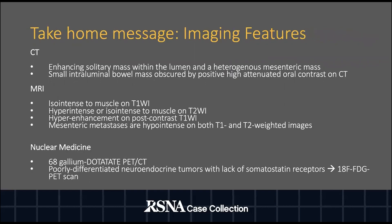On CT imaging, small bowel carcinoid tumor presents as an enhancing solitary mass within the small bowel lumen with a heterogeneous mesenteric mass. This intraluminal bowel mass can be obscured by high-attenuation oral contrast. On MRI, carcinoid tumors are iso-intense to muscle on T1-weighted imaging, hyper-intense or iso-intense to muscle on T2-weighted imaging, and hyper-enhancing on post-contrast T1-weighted imaging. Mesenteric metastases are typically hypo-intense on both T1 and T2-weighted imaging. For nuclear medicine, 68-gallium DOTATATE PET-CT and 18F FDG PET scans can be helpful for diagnosis.